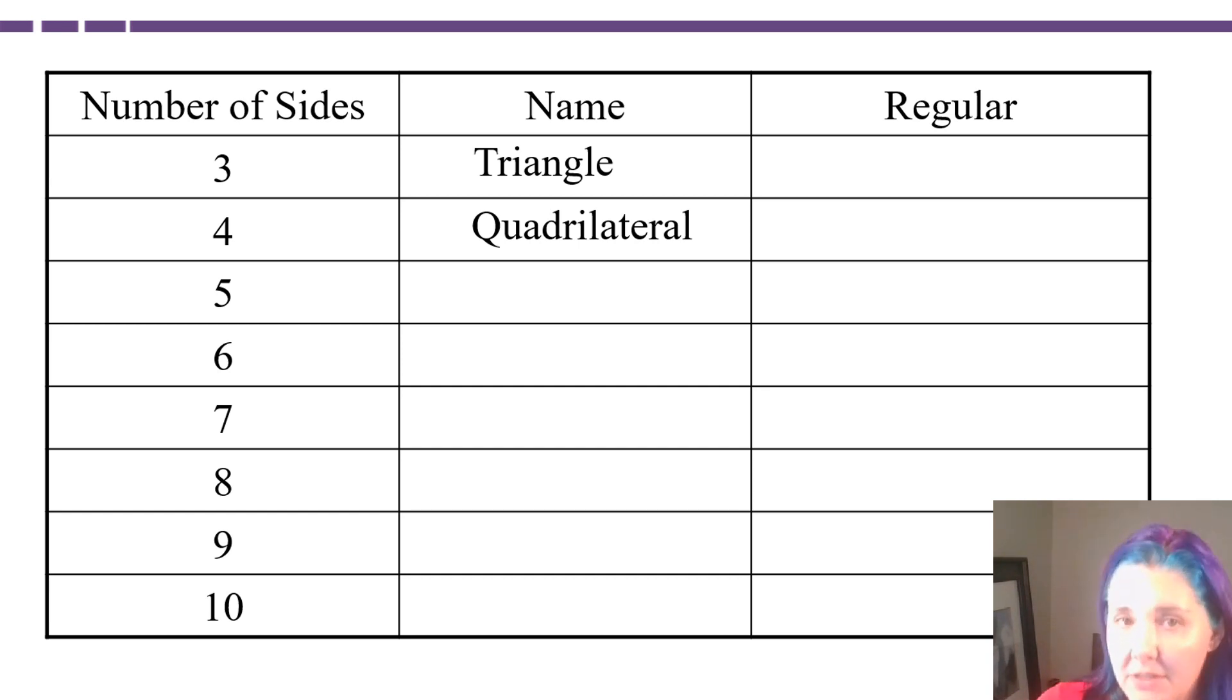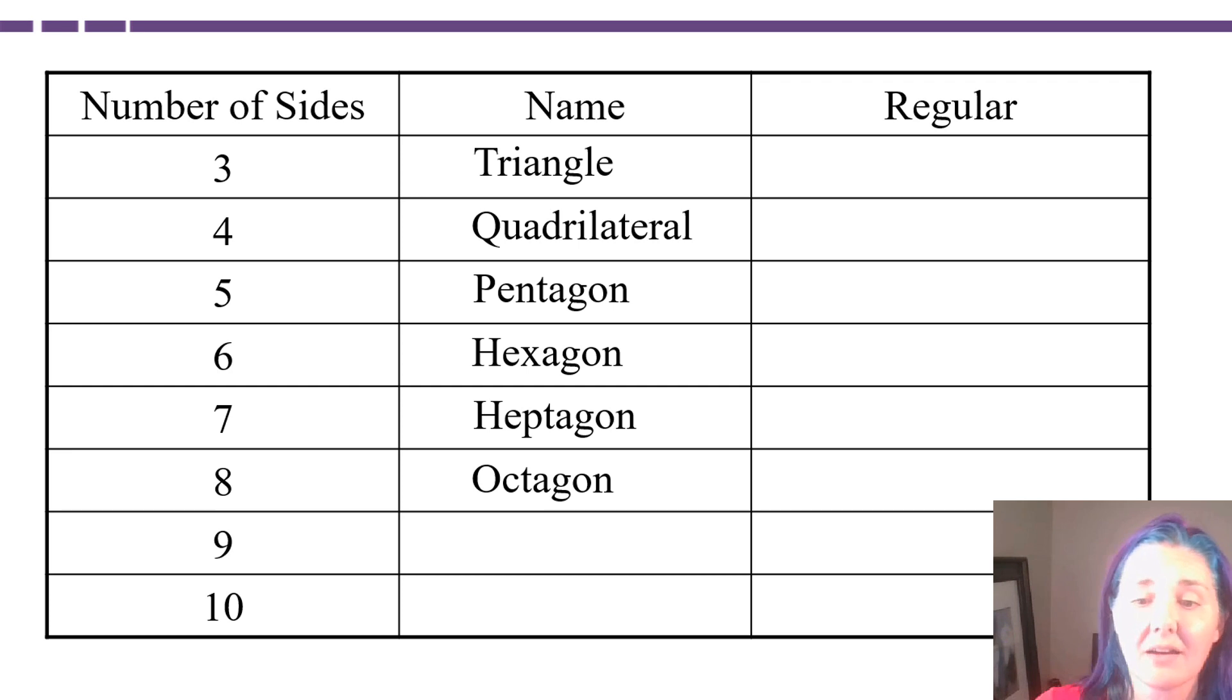Do you know what a five-sided polygon is called? If you said pentagon, you're correct. A six-sided polygon is called a hexagon. A seven-sided polygon is called a heptagon. An eight-sided polygon is called an octagon. Nine-sided polygon is a nonagon, and a ten-sided polygon is called a decagon.